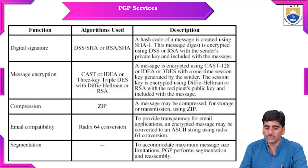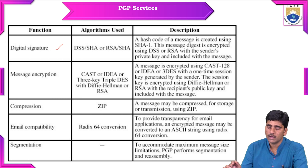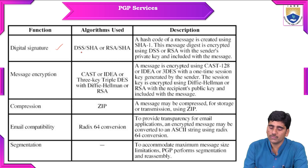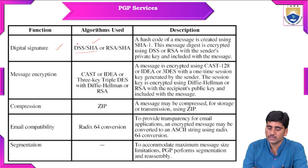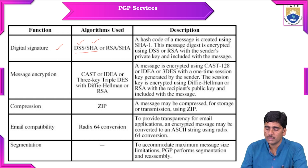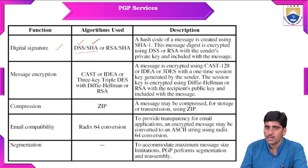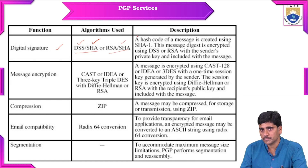The first PGP service is digital signature for authentication. The digital signature is applied for authentication purposes. To use this digital signature function, we have to use certain algorithms: the first one is the DSS algorithm (Digital Security Standard), and the SHA algorithm — specifically RSA or SHA algorithms.